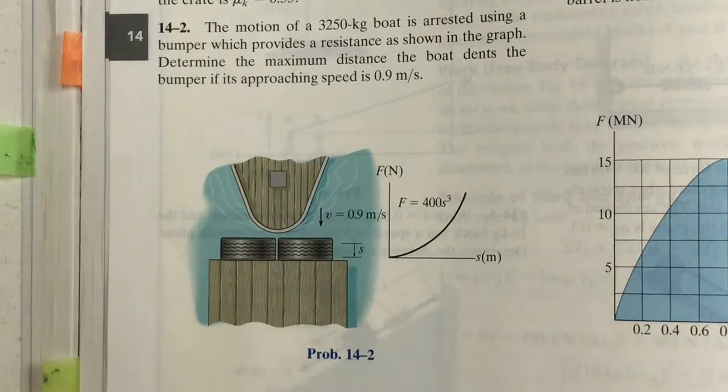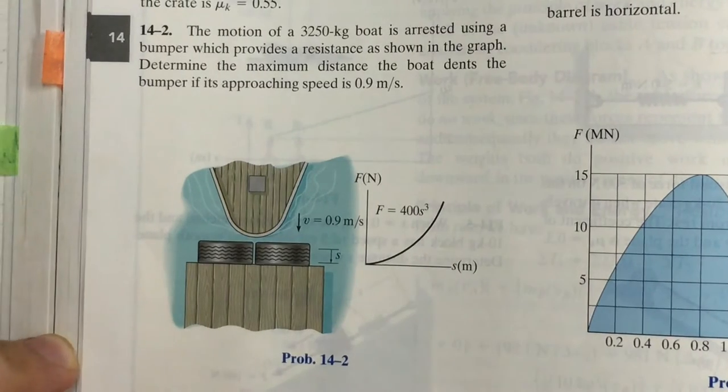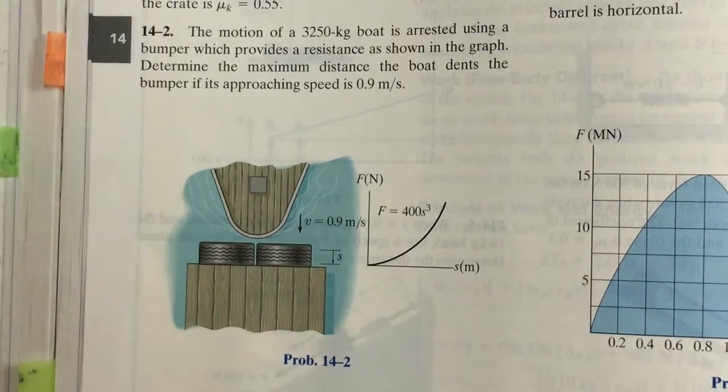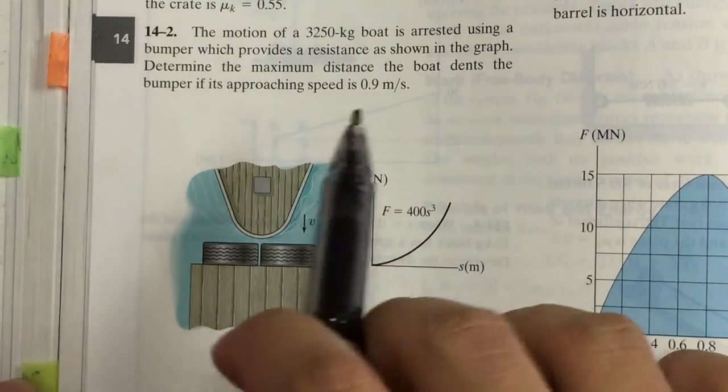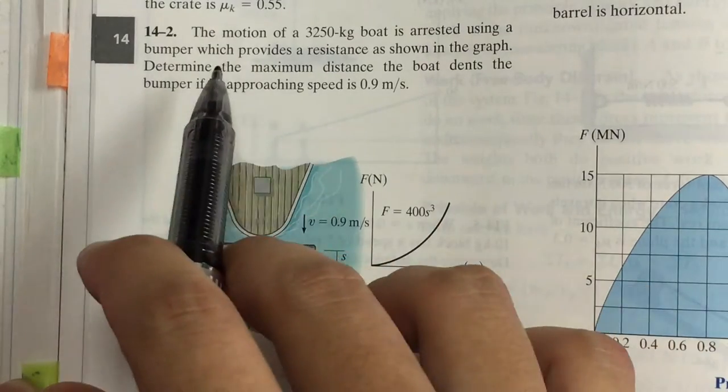Alright, so problem 14.2. Since we are in a program of maritime technology, this boat problem is probably more relevant to us. The motion of the 3250 kilogram boat is arrested using a bumper which provides a resistance as shown in the graph.